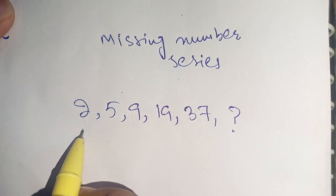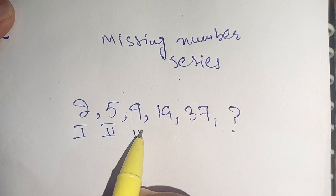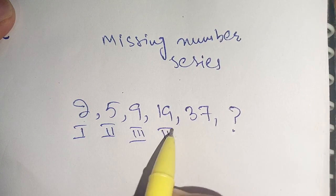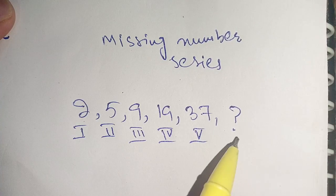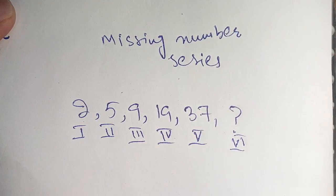The first term is 2, the second term is 5, the third term is 9, the fourth term is 19, the fifth term is 37, and we have to find the sixth term.